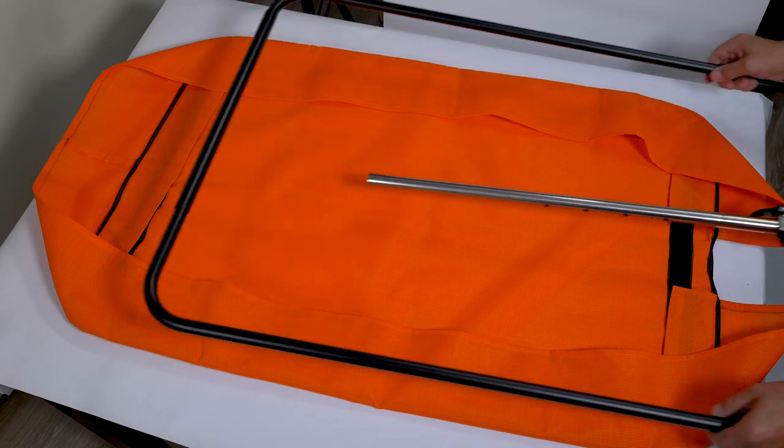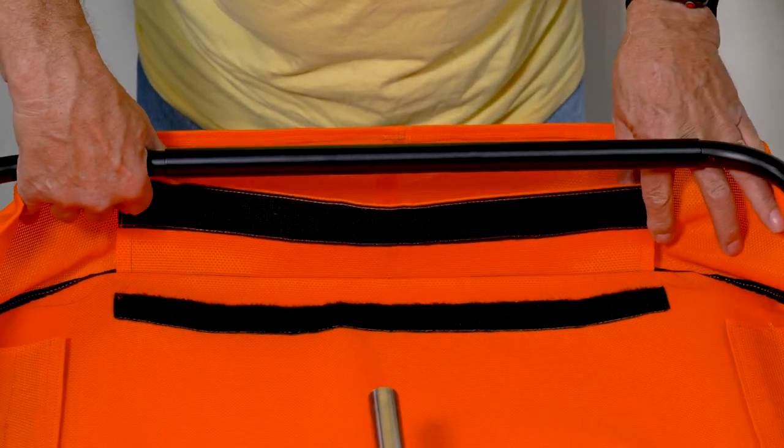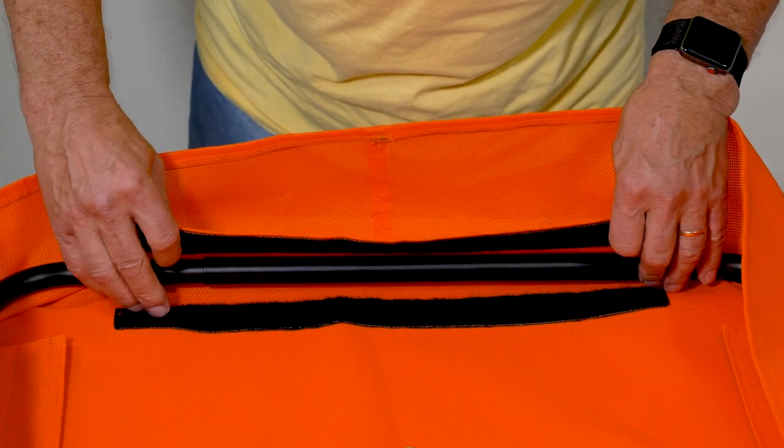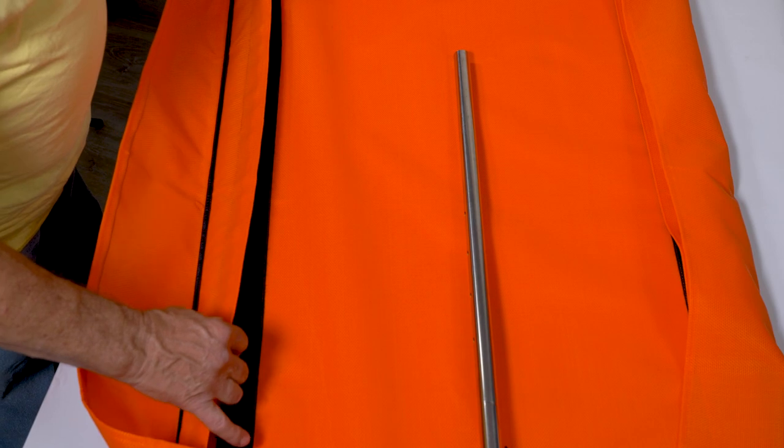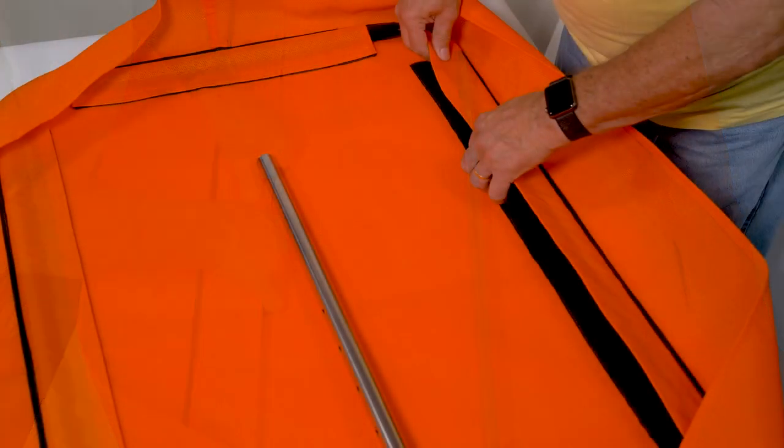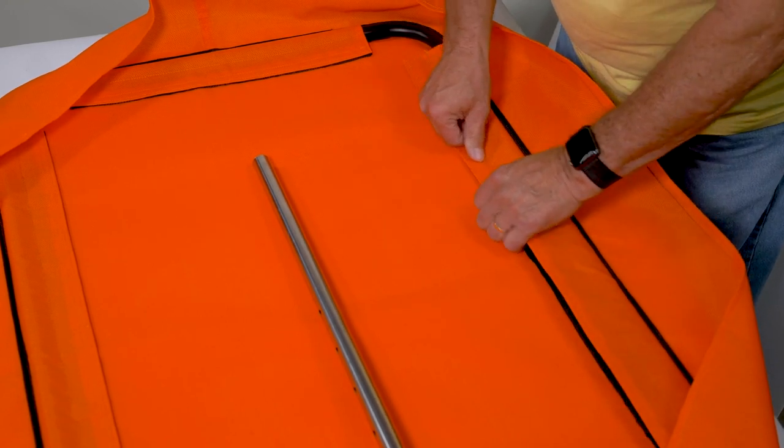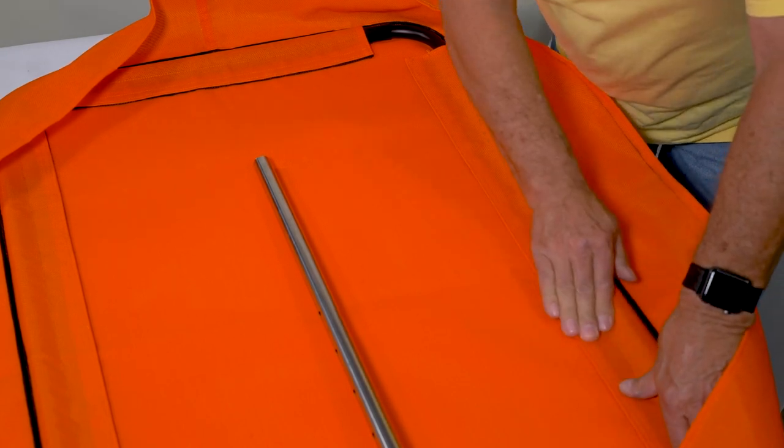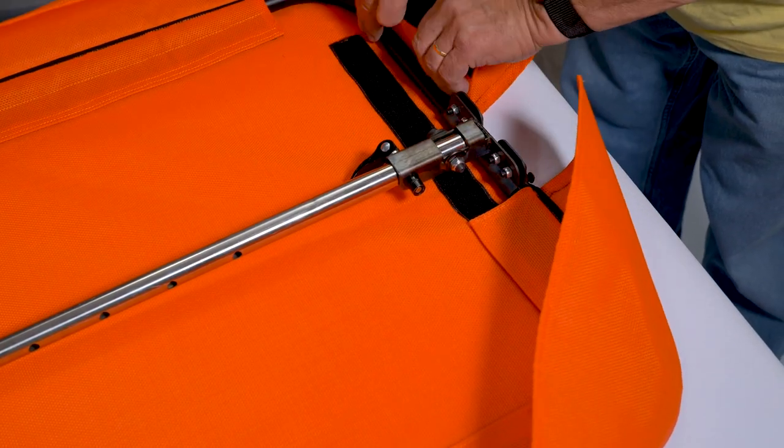Now let's install the frame to the canopy. Start with the front of the canopy and then apply the velcro to the frame. Make sure all sides of the frame are velcroed in. Be sure to stretch it tight so the frame and canopy are secured.